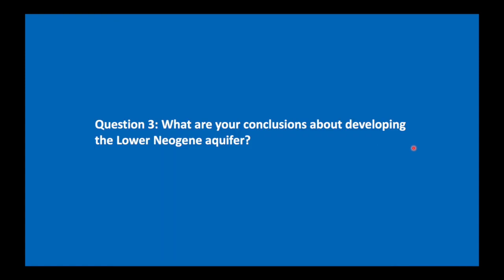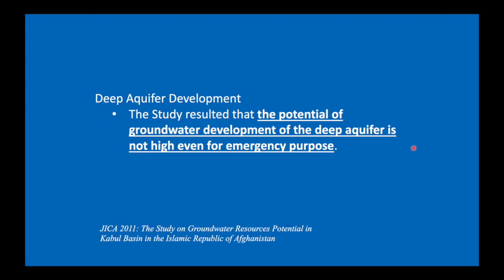Let's have a look at our third question. What are the conclusions about developing the lower Neogene aquifer? If we go back to the JICA report, they conclude with the potential of groundwater development of the deep aquifer is not high, even for emergency purpose. I think we can fully agree with this conclusion. The lower Neogene aquifer is really not suitable for development as a water supply source for Kabul city, mostly because you have such huge drawdowns for very small discharges. And big drawdowns means high energy costs, which means that the cost of the water will become very high indeed.